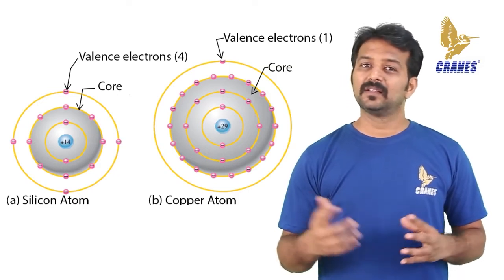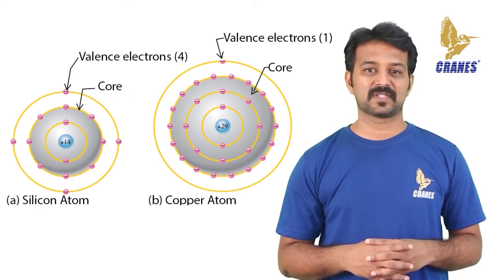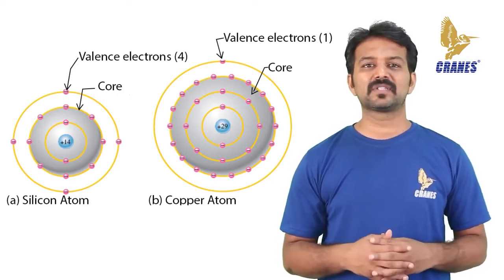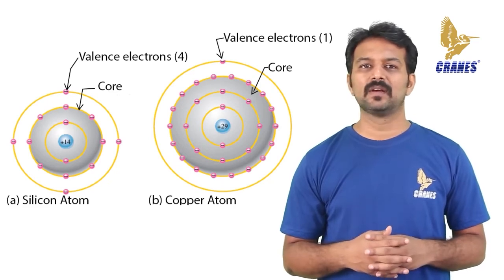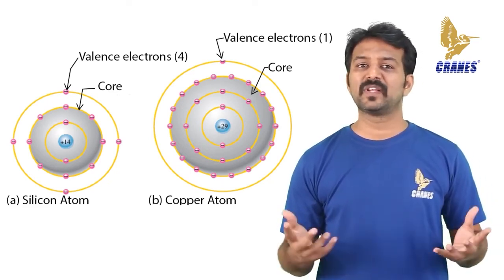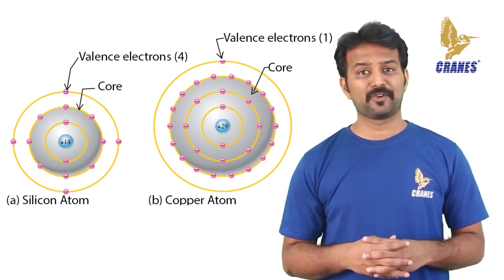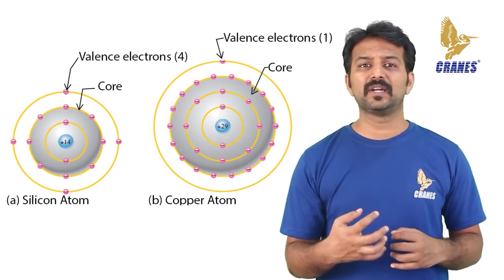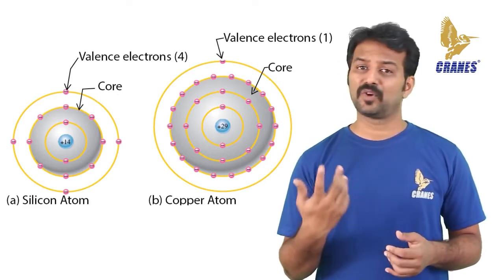Recall that the core includes everything except the valence electrons. The valence electron in the copper atom feels an attractive force of plus 1 compared to a valence electron in the silicon atom which feels an attractive force of plus 4. Therefore, there is more force trying to hold a valence electron to the atom in silicon than in copper.